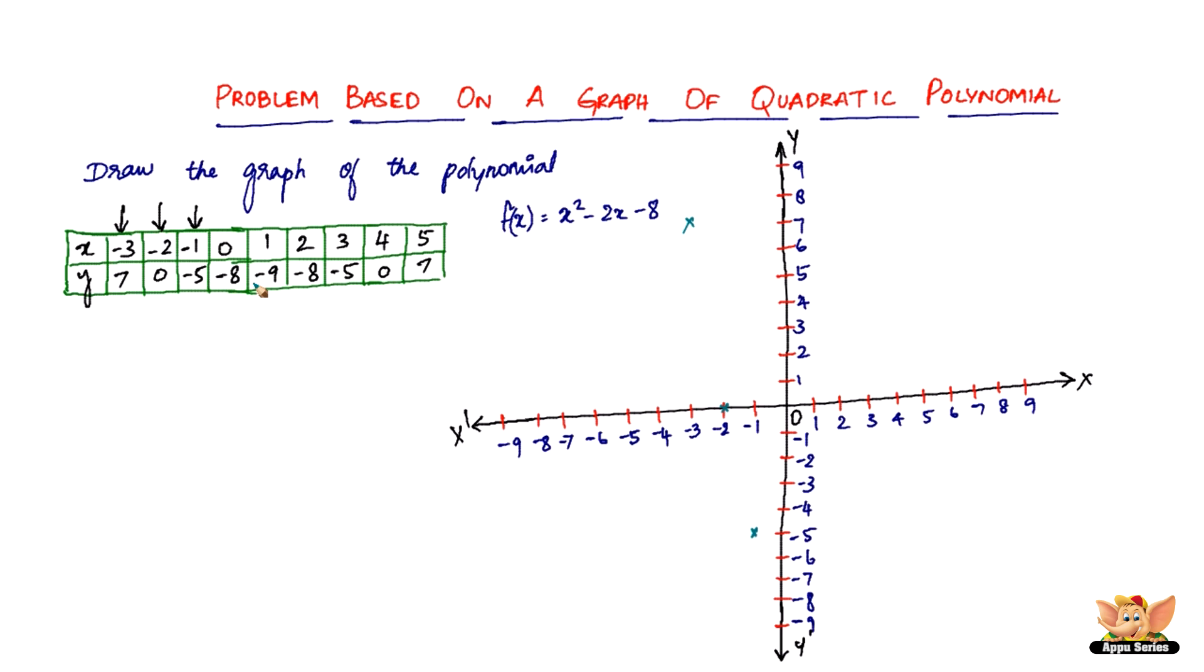Then we've got a 0 and a minus 8. 0 on the x and minus 8 on the y, so it's exactly here. Then 1 on the x and negative 9 on the y. 1 on the x and negative 9 on the y. It's exactly this point coincides with the numbers. So please take note of it.